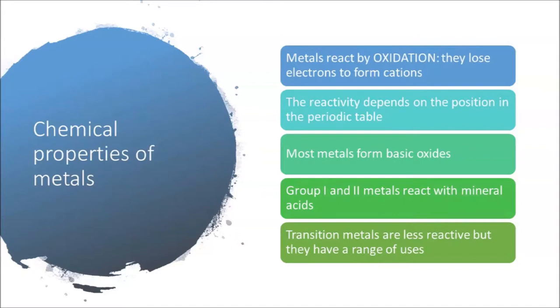Let's look at a summary of some of the chemical properties of metals. We know they react by oxidation, and the reactivity depends on position in the periodic table. Most metals form basic oxides, and group 1 and 2 metals react with mineral acids. The transition metals are less reactive but have a range of uses. Thank you for watching. Please check the project portal for more resources on the physical and chemical properties of metals.